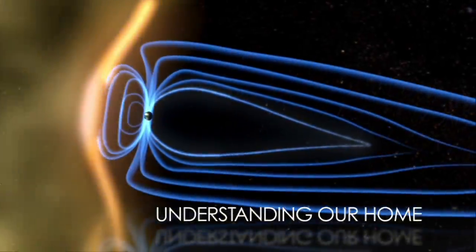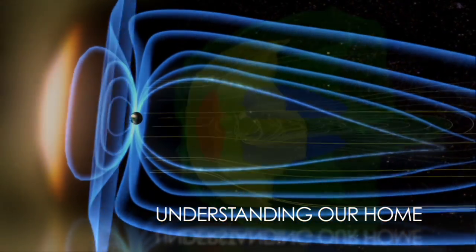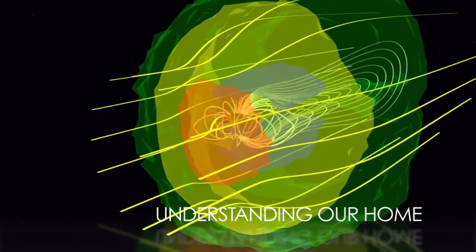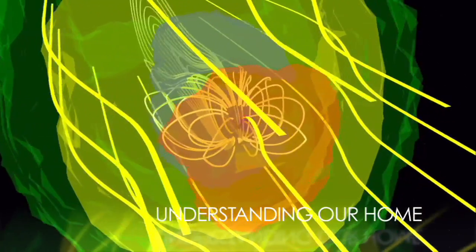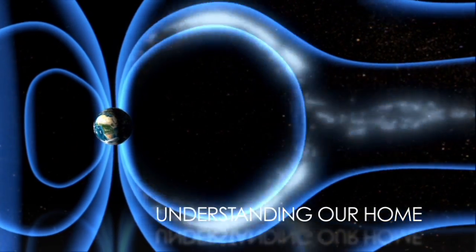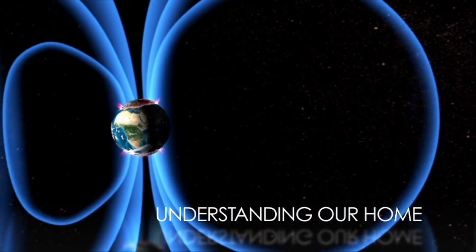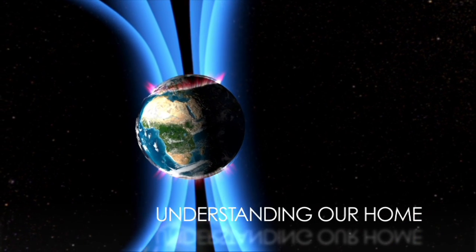NASA also studies how the Sun's variability affects our home. Solar storms and solar winds have a strong effect on the Earth and its magnetic field. By studying the Sun's natural ebb and flow, we can learn more about its role in creating phenomena such as the Northern Lights.